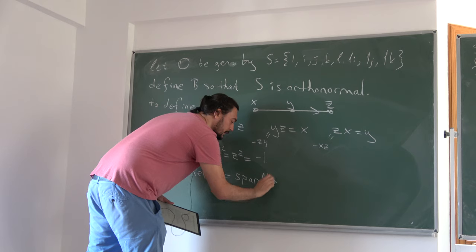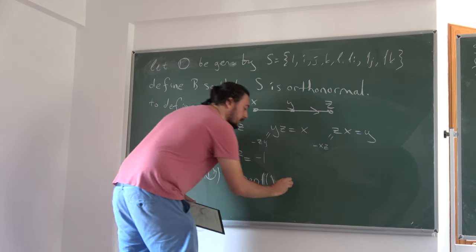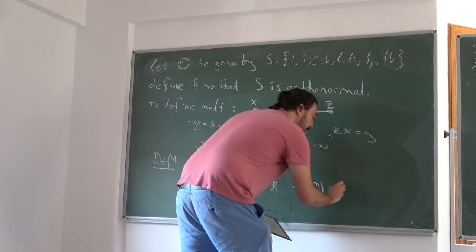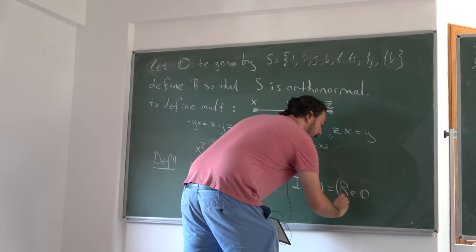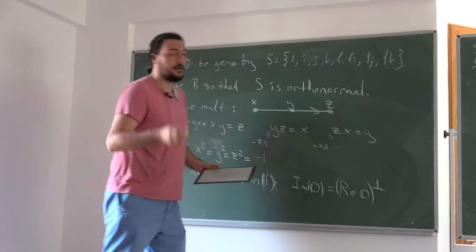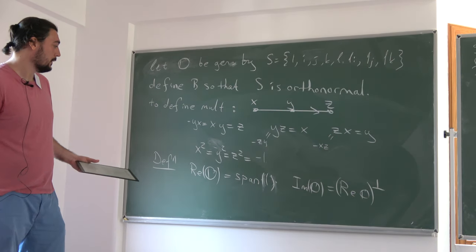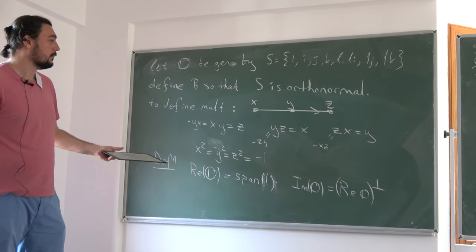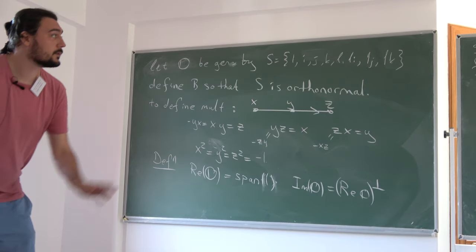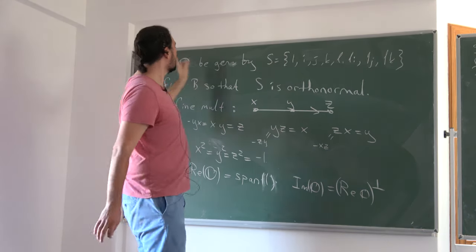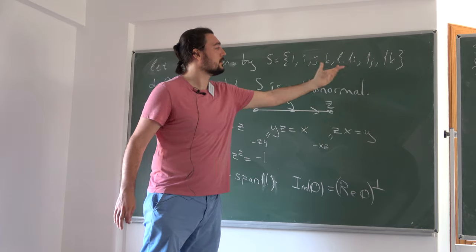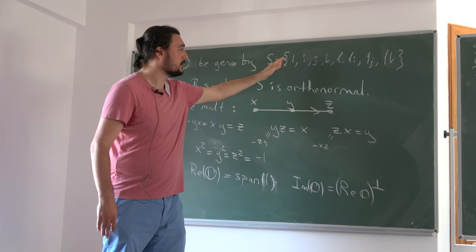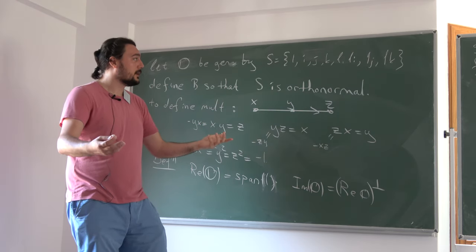We define G2 to be the automorphism group of Octonians: linear maps A in GL(8,R) such that A(U·V) = A(U)·A(V). The same definition works over any field. Being an automorphism of a unital algebra, G2 must preserve the real part — it takes the identity to itself — so we can think of G2 as a subgroup of GL(7,R), since the real part is always fixed.